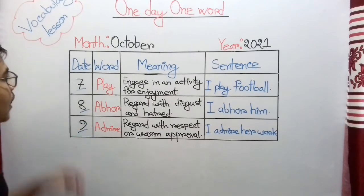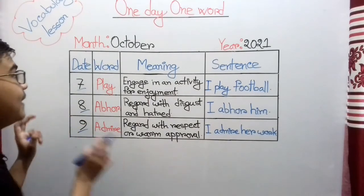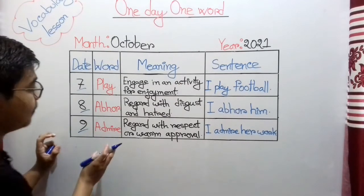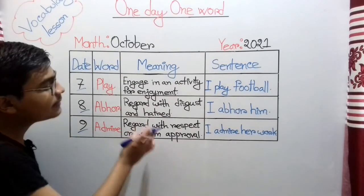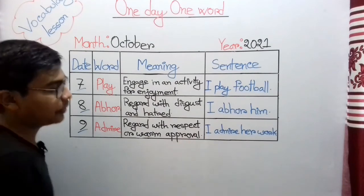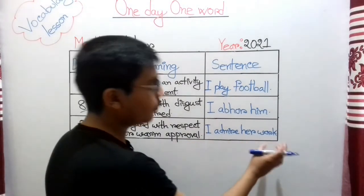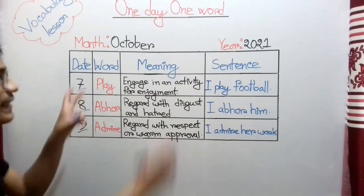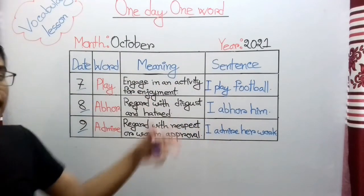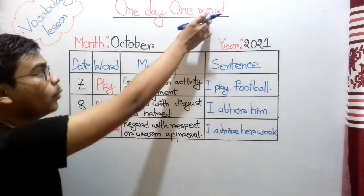On 9th October I learned the word 'admire,' which means 'regard with respect or warm approval,' and the sentence is 'I admire her work.' This is an example of the method that I described — 'One Day One Word' — our main goal is to learn one new word every day.